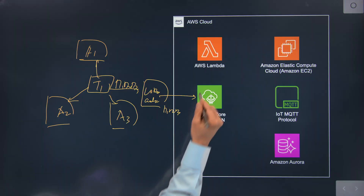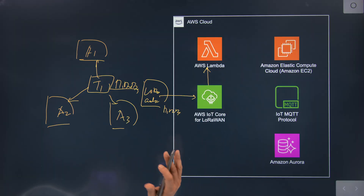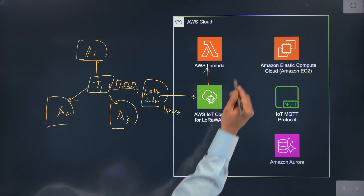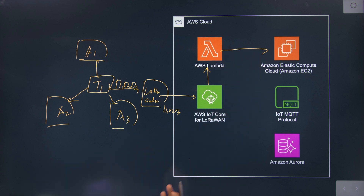I see Lambda — what's the function of Lambda? From AWS IoT Core for LoRaWAN, what you have is the decrypted payload data, which still contains D1, D2, D3, but they're in a machine-readable format called Base64. We do need to convert this to something we can analyze, so we go from machine-readable to human-readable through the Lambda service.